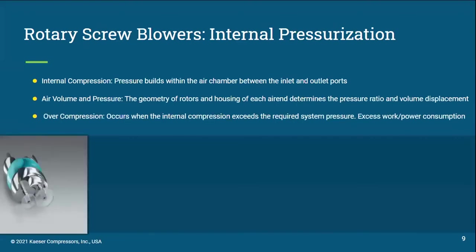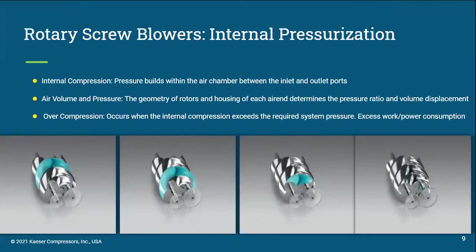Last but not least, we have rotary screw blowers. Rotary screw blowers utilize internal compression, generated by ingesting air into one side of the blower, compressing that air between a male and female rotor, and discharging it on the opposite side. Due to this internal compression, there is always a minimum pressure present, which can lead to over-compression of the air if the internal compression exceeds the required system pressure. However, this is uncommon as the minimum operating pressure is usually less than 5 psig. These blowers are simple and dependable, just like a rotary lobe blower, but benefit from the improved efficiency achieved through internal compression. This improved performance typically comes at an increased price over rotary lobe options, but they are often cheaper than the dynamic machines.